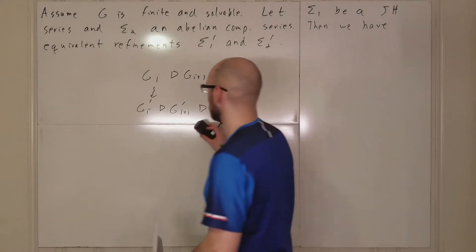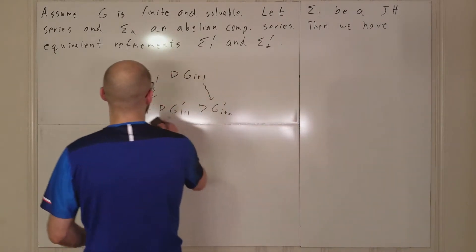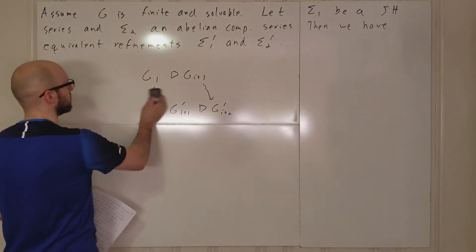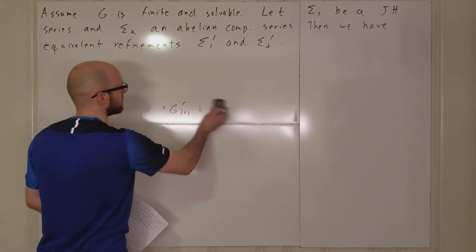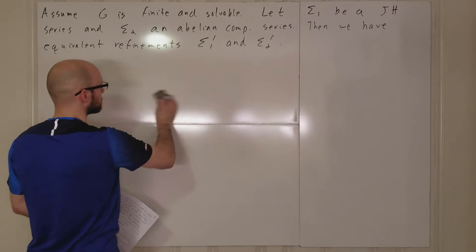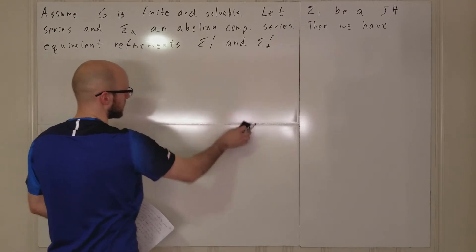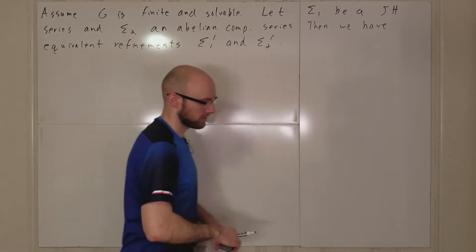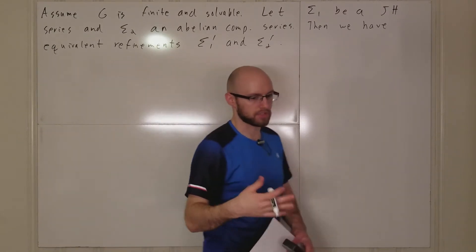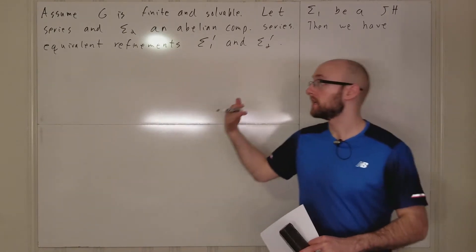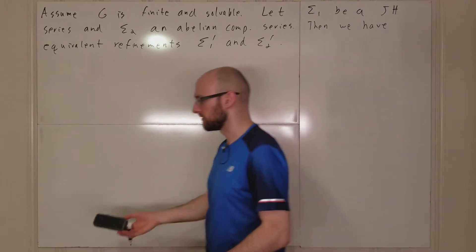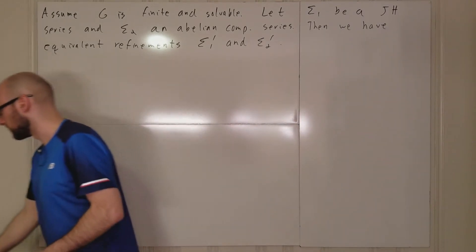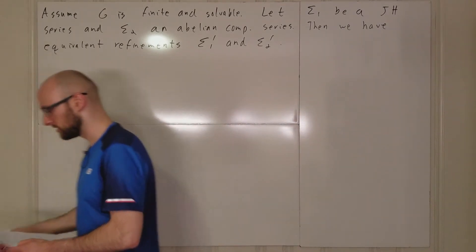We can just throw an isomorphism theorem at this and prove that this mod this is a subgroup of this mod this, so it's a subgroup of an Abelian group and thus is Abelian. This is something you can prove: if you have a refinement of an Abelian composition series, then you're also going to have an Abelian composition series.